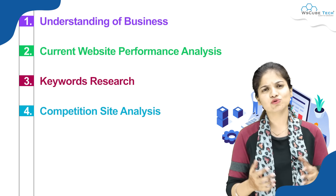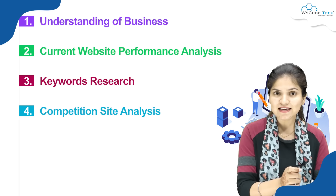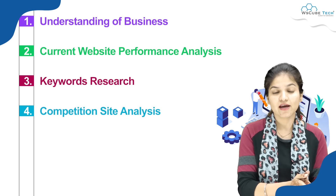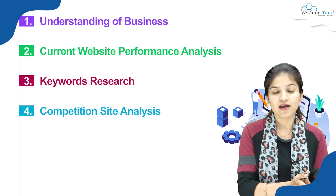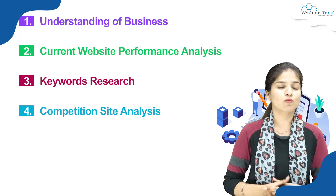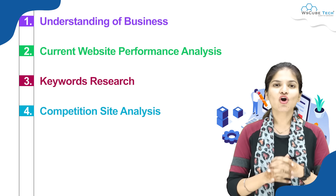Our second step is keyword research. After doing keyword research, we analyze our competitors. For example, if there is a designing showroom with a website and you want to rank it in Delhi, you look at who the designing showrooms or designers in Delhi are — who your competitors are, who is ranking for your selected keywords. You have to do a thorough competitor analysis.